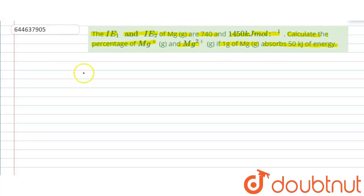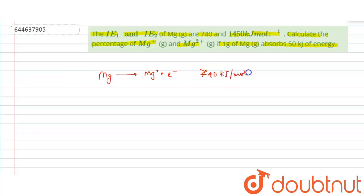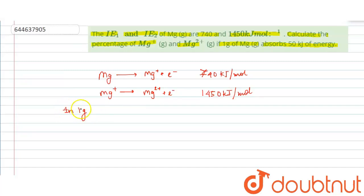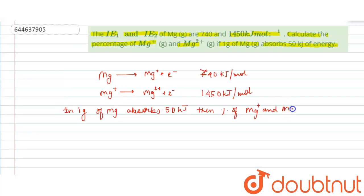We are given that Mg → Mg⁺ + e⁻ requires 740 kJ/mol (first ionization enthalpy), and Mg⁺ → Mg²⁺ + e⁻ requires 1450 kJ/mol. We have to calculate the percentage of Mg⁺ and Mg²⁺ when 1 gram of magnesium absorbs 50 kilojoules.